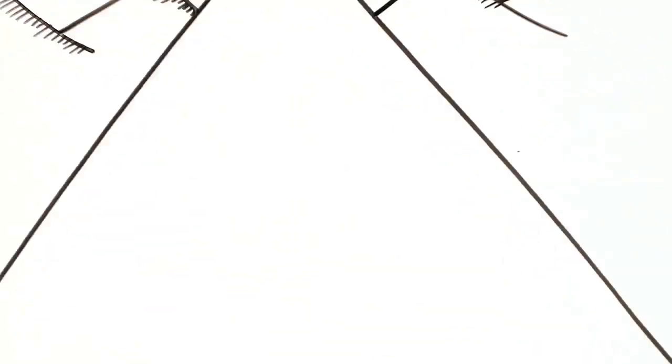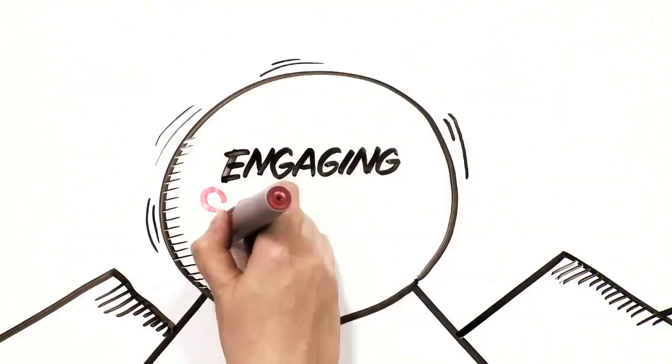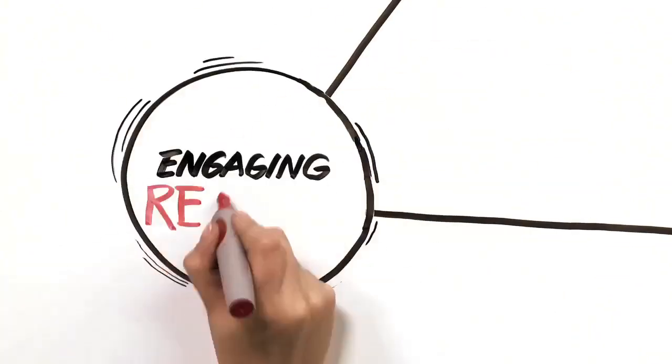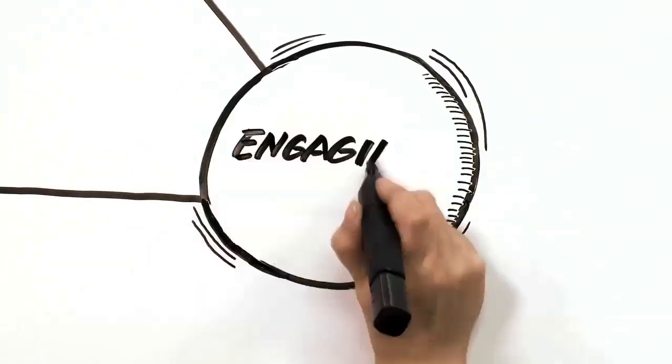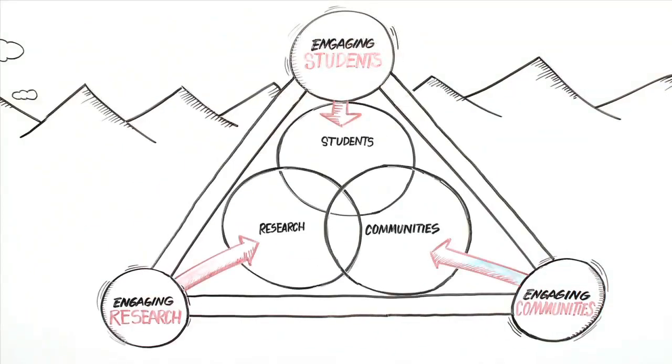But what does it mean to be an engaged university? Our vision is founded on three goals: engaging students, engaging research, and engaging communities. These goals don't operate independently of each other, they're interconnected. Indeed, it's their interaction that gives the engaged university its distinctive character.